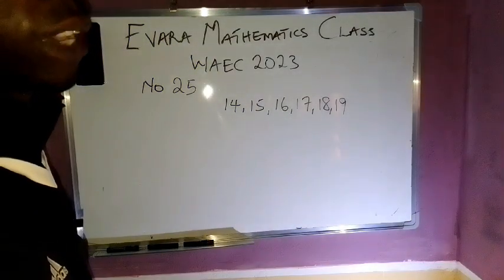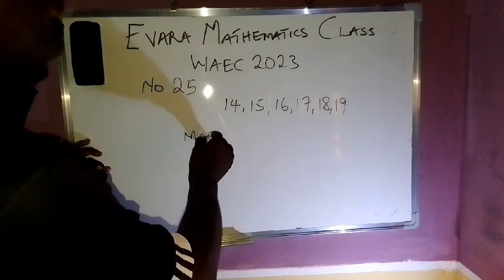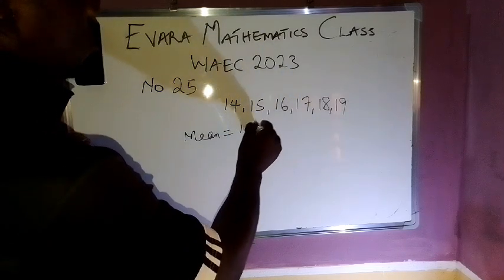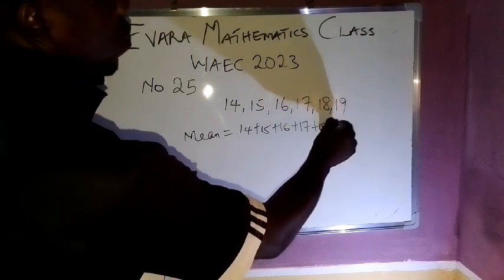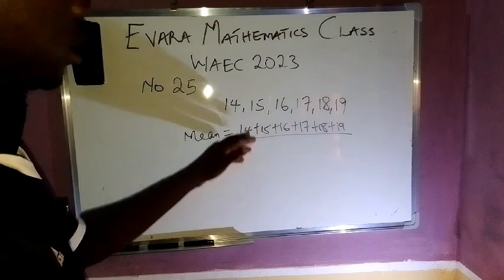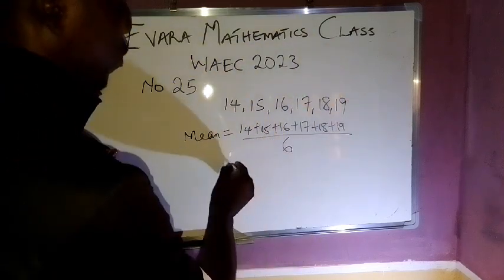So first of all you find the mean, and the mean is equal to the sum of all the numbers then divided by, how many are they? 1, 2, 3, 4, 5, 6. You divide by 6.